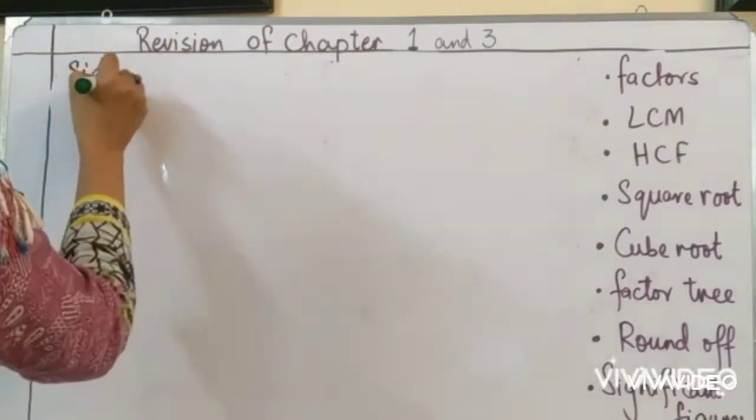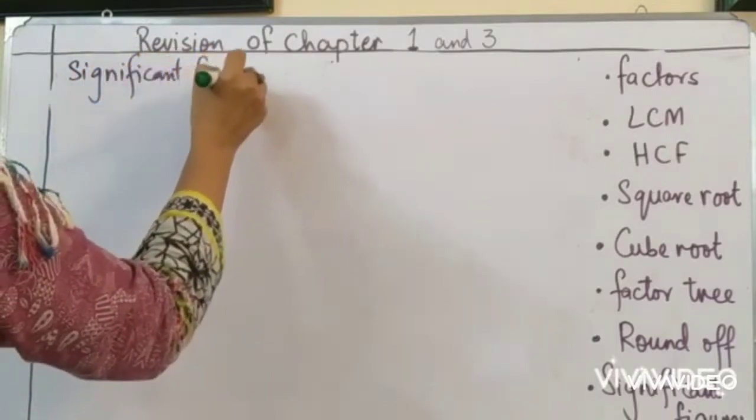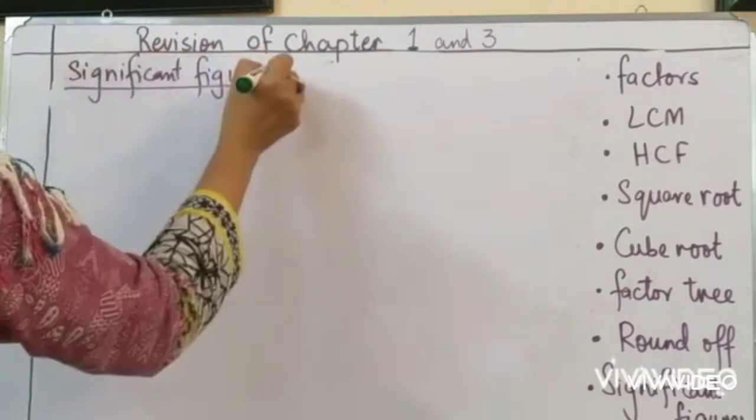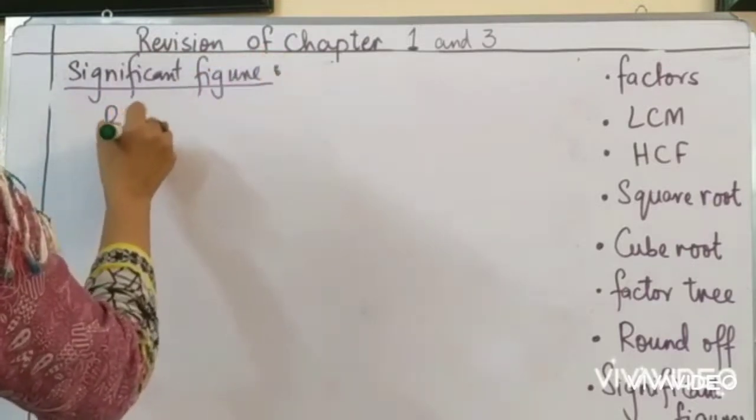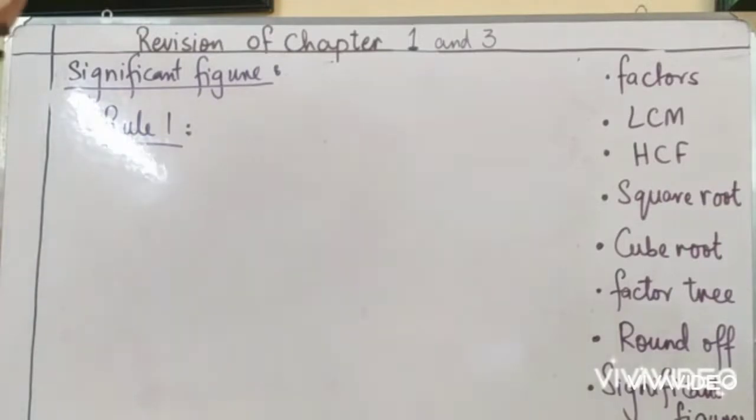Now significant figures have certain rules. Starting from rule 1. Rule 1 on page 64, just read with me. All non-zero digits are significant. All non-zero digits are significant.